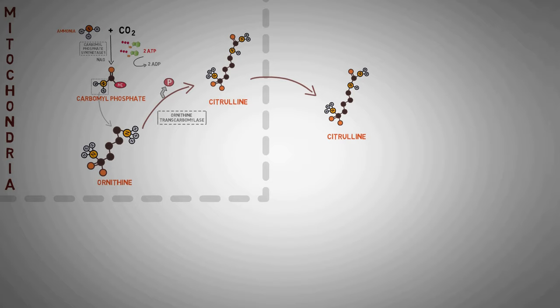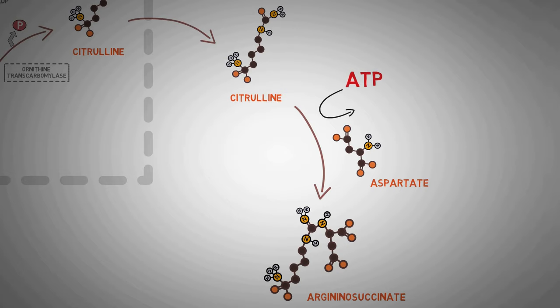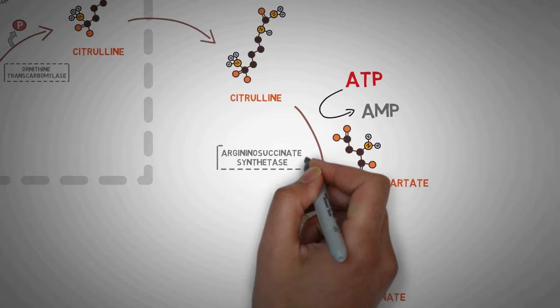For our next reaction, the citrulline moves out of the mitochondria into the cytoplasm and gets condensed with one molecule of aspartate to form argininosuccinate. Aspartate is another amino acid and this serves as a source of additional amino group that gets attached to citrulline. This reaction is ATP dependent and is catalyzed by the enzyme argininosuccinate synthetase. Note that in this reaction, the ATP is converted into AMP and inorganic phosphate group gets released.